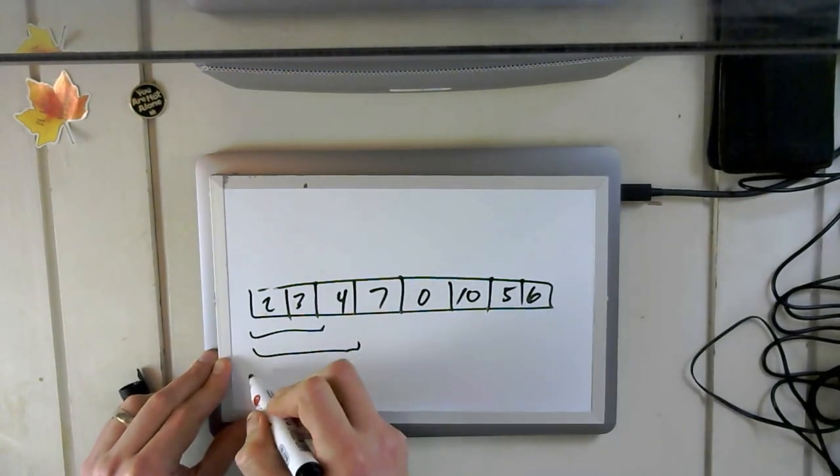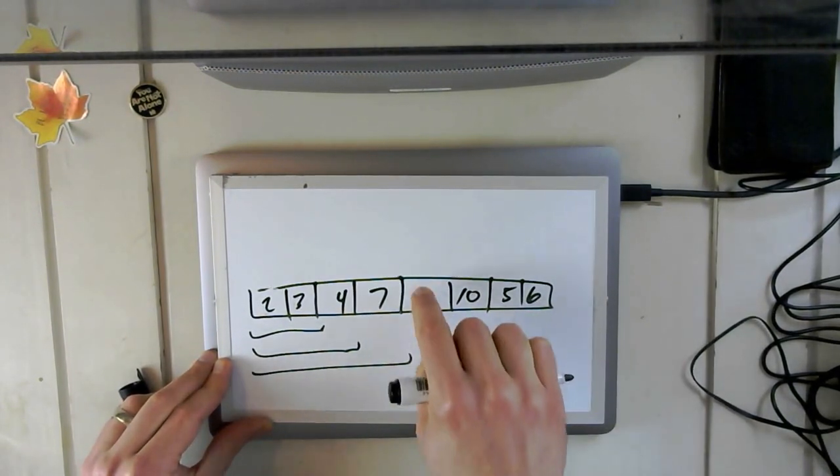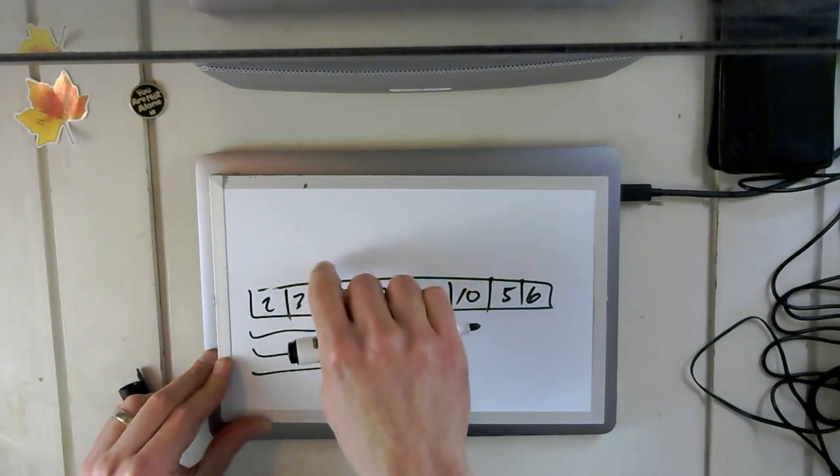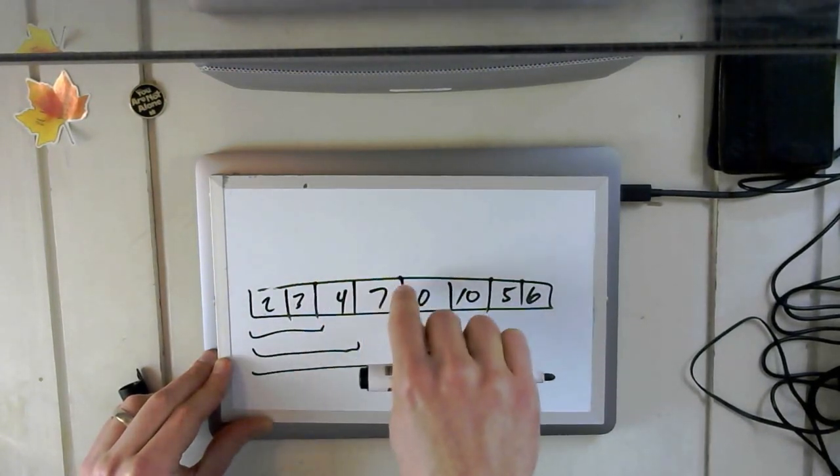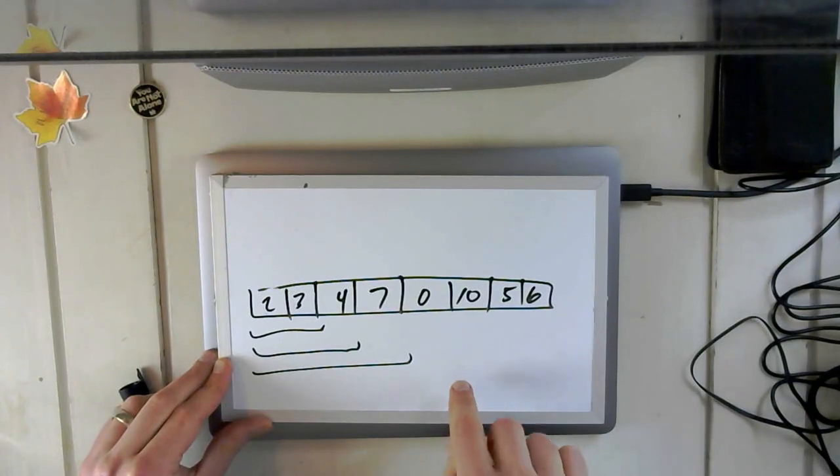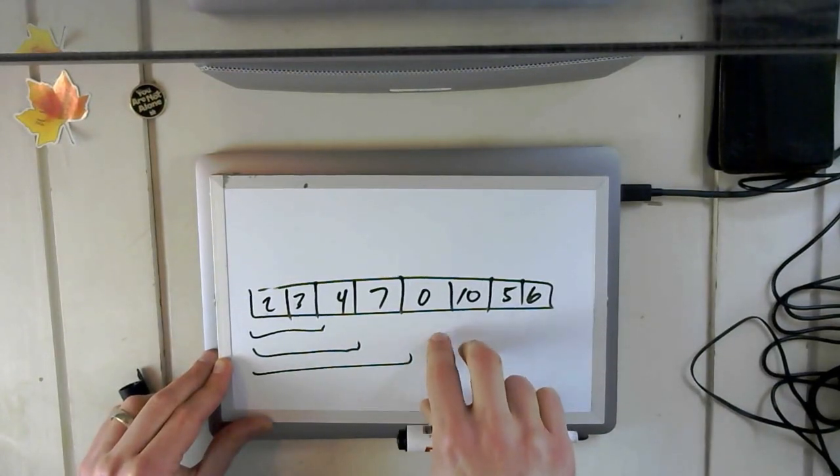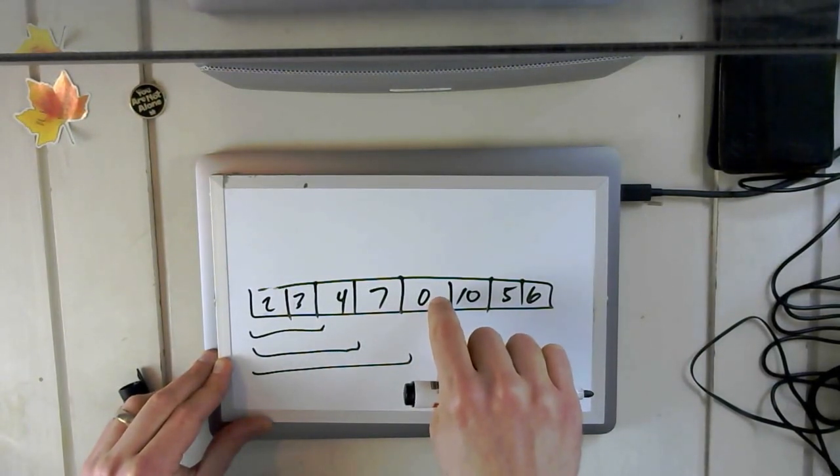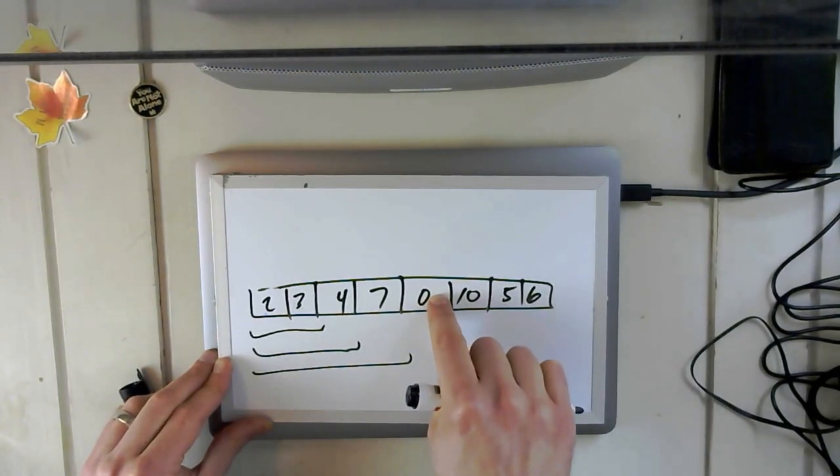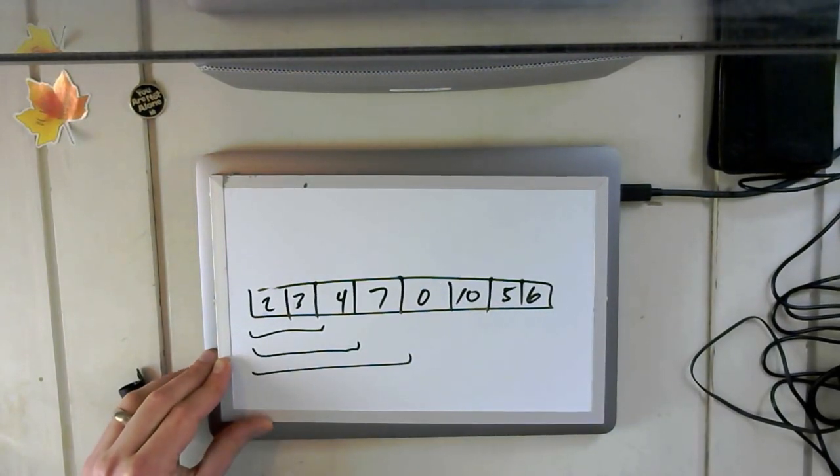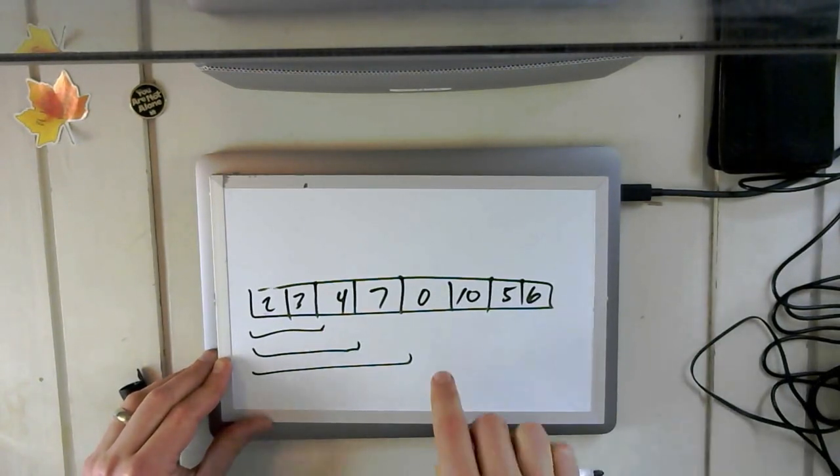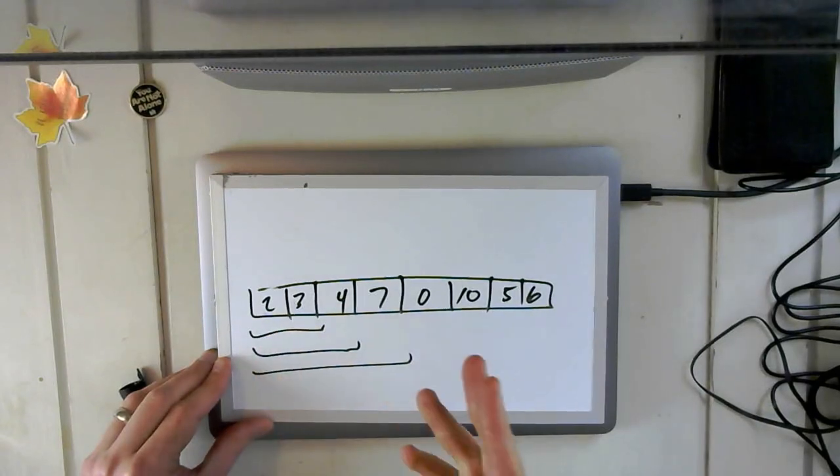Now, when I would get to zero, what would happen is I'd have to take zero, compare it with seven, compare it with four, compare it with three, compare it with two, and I would insert it there, and all these values would move to the right. And so what you'll see is in every step, I'm taking, selecting the value from the unsorted part is constant time. I'm always using the leftmost value from the unsorted part of the array. And inserting it is O(n), because I don't know where it goes.